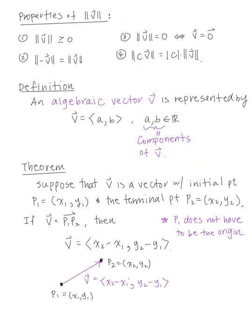Next are properties of the magnitude of V. The magnitude is the length, so it must be greater than or equal to zero. The magnitude of negative V equals the magnitude of V, because negative V has the same length but opposite direction. The norm of V equals zero if and only if V is the zero vector. The magnitude of constant times V equals the absolute value of the constant times the magnitude of V.